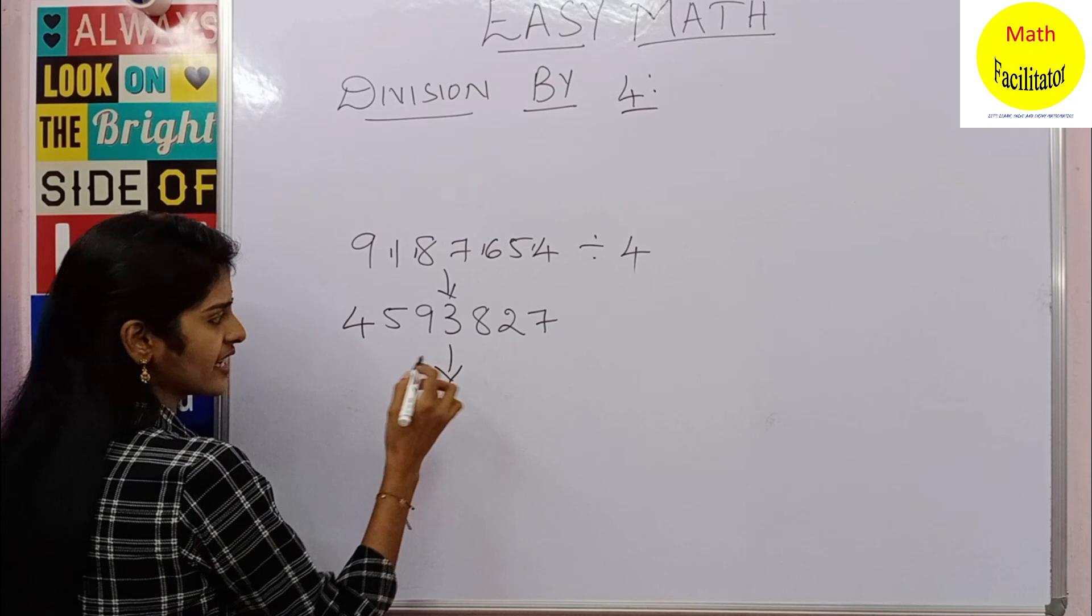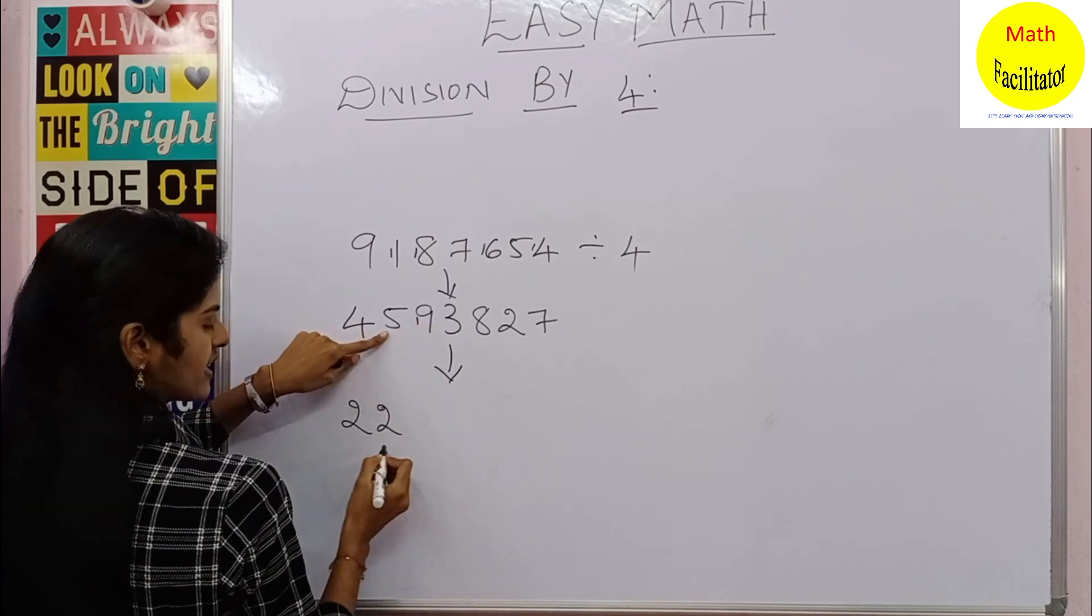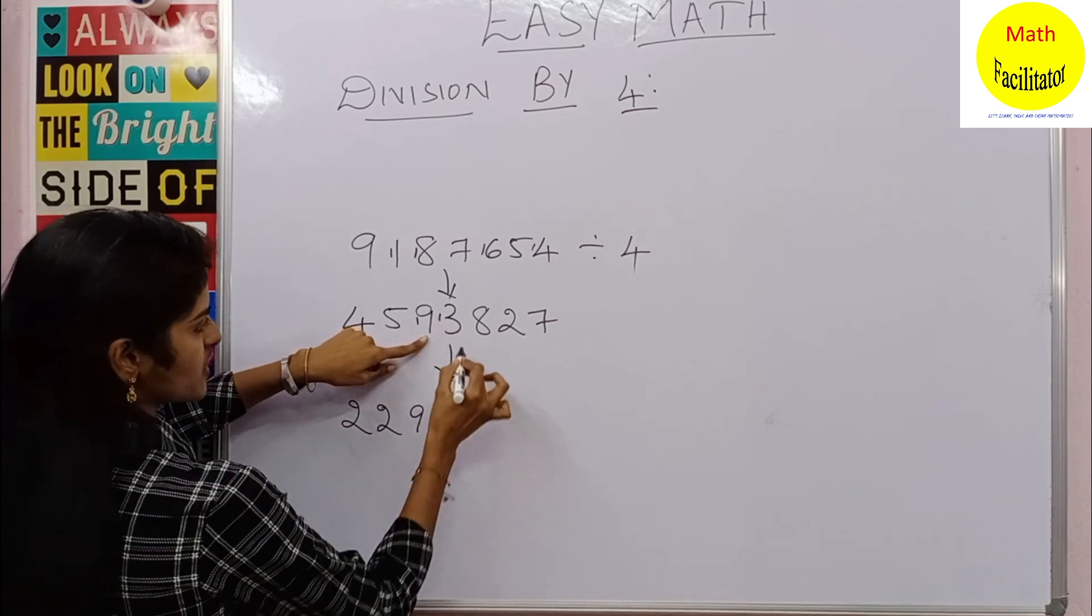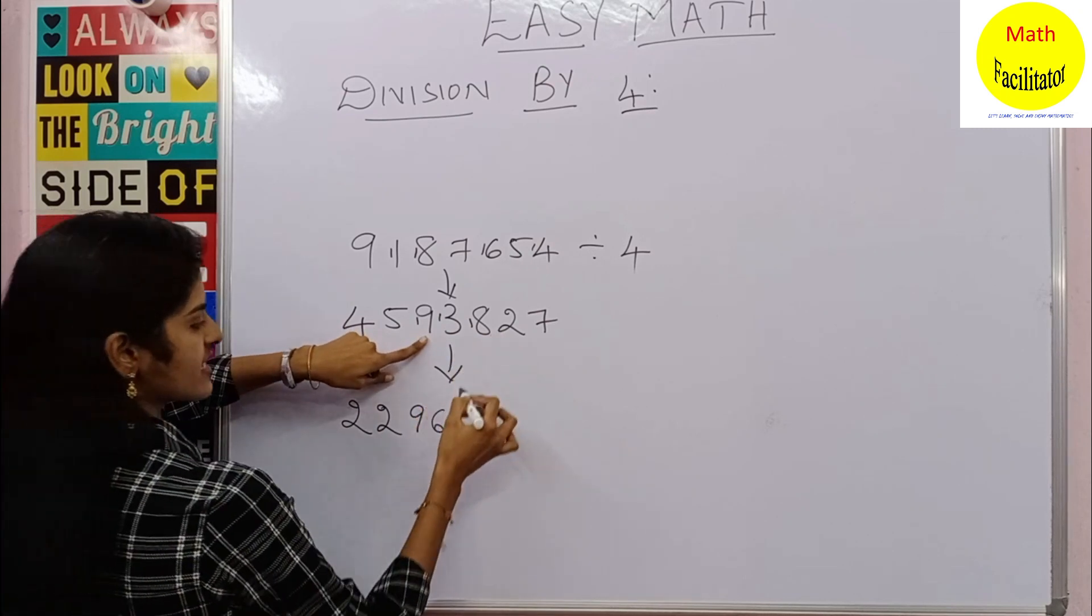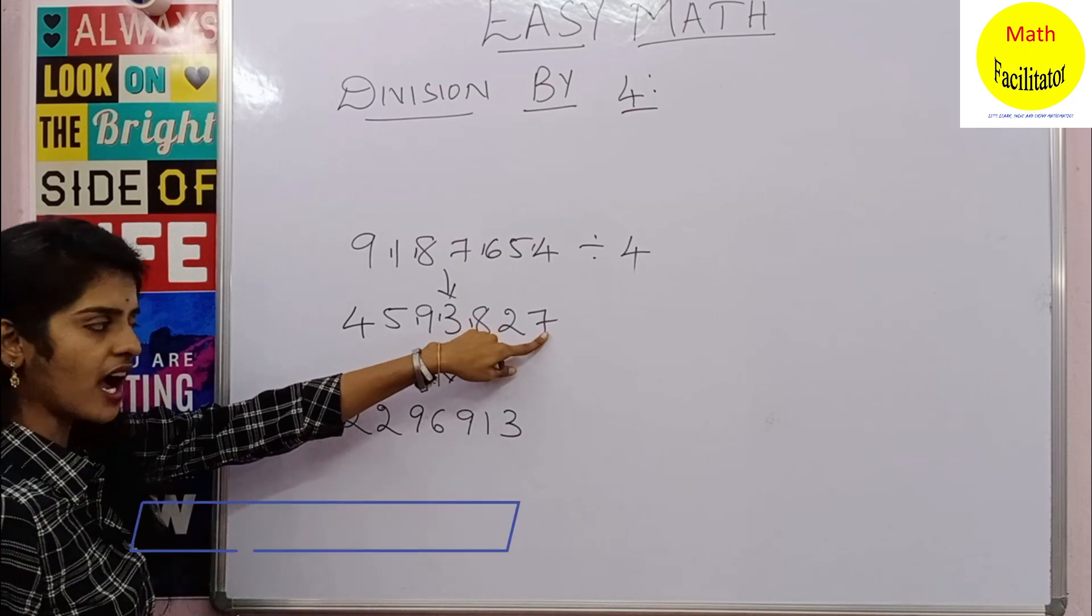Now let us continue. So again you have to divide by two. So it is two twos are four, two twos are four, one is reminder. Two nines are eighteen, again one is reminder. Two sixes are twelve, again one is reminder, so this is 18 now. Two nines are eighteen. Two ones are two. Two threes are six.